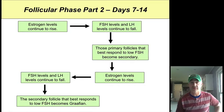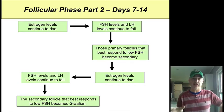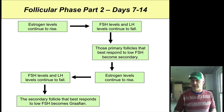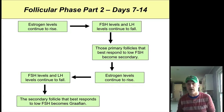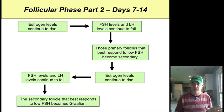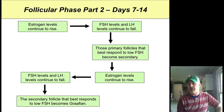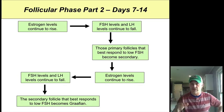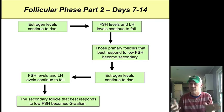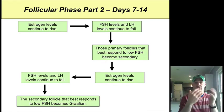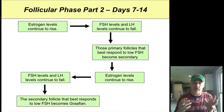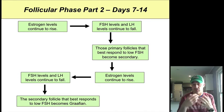In the second half of the follicular phase, follicular cells are stimulated to make more and more estrogen, so estrogen levels continue to rise in the blood. Because estrogen is causing the pituitary to make but not release FSH and LH, those FSH and LH levels continue to fall. What we're setting up here is a kind of survivor follicle selection — only those follicles that respond best to the low levels of FSH continue to develop, narrowing down the number of follicles so we don't get a litter of children. Generally only one follicle between both ovaries tends to reach the Graafian stage.